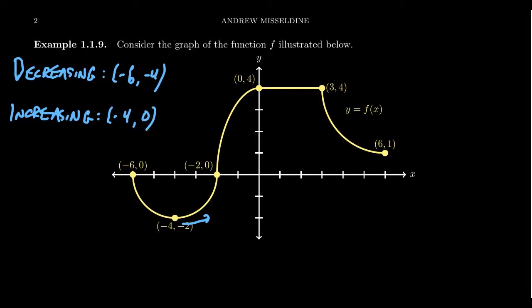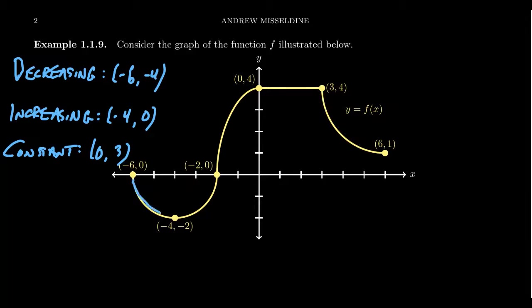In all these cases, we're recording the x-coordinates, not the y-coordinates — we need to know the address on the domain. When we hit x = 0, the function flatlines, so the function is constant on the interval (0, 3). At x = 3, it switches again, and from 3 to 6 we see it's decreasing. So there are two sectors where the function was decreasing — disjoint intervals — and we use the union symbol to connect them: decreasing on (−6, −4) ∪ (3, 6).